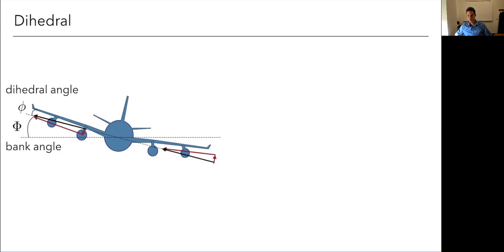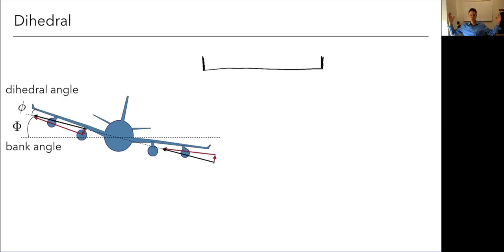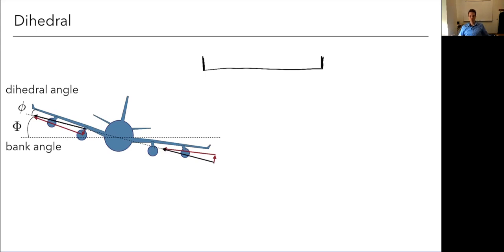You don't always need geometric dihedral to achieve roll stability, but it's one way. Another common way is by adding winglets — vertical or canted surfaces at the wingtips that have a similar effect to dihedral. Winglets can help reduce induced drag, but you can also increase span more effectively for that purpose. A good reason to use winglets specifically is to increase lateral stability, which you can't always achieve just by increasing span.